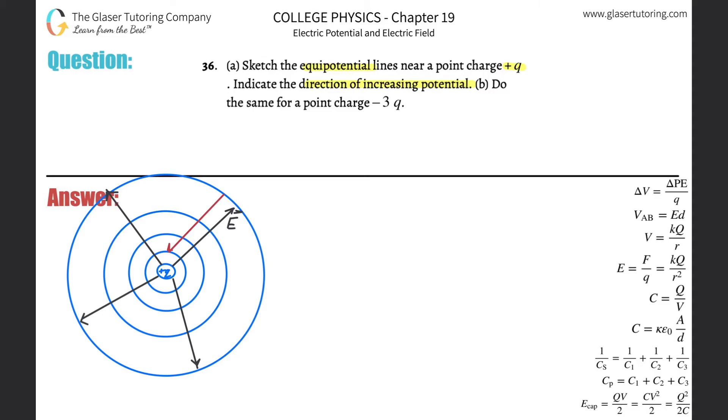Do the same for a point charge of negative 3. Alright, so basically it's going to look essentially the same. So here, let's just say we had a negative 3 coulomb charge. We got these circles, same kind of deal.